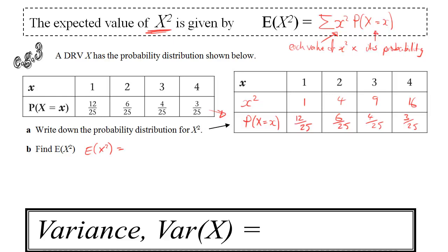To find the expected value of x squared here, looking back at that formula, I need to do each value of x squared multiplied by its probability. So we have 1 multiplied by 12 over 25. And then from the table, we've got 4 multiplied by 6 over 25. 9 times 4 over 25. And 16 times 3 over 25. That turns out to be 120 over 25, which we can write as a decimal exactly as 4.8.